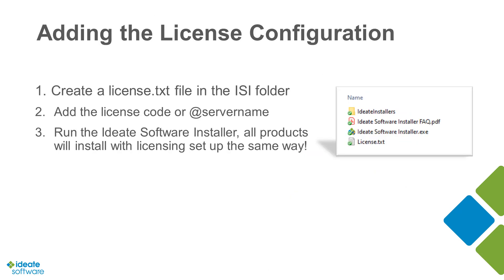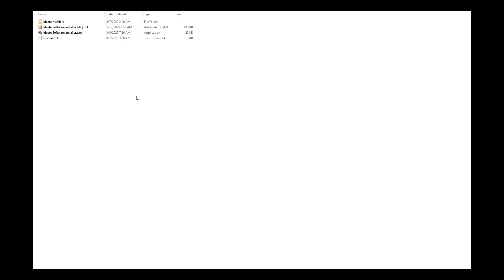To ensure all users are automatically set up with the correct network or standalone license, we recommend including the license configuration with the install process. Let's see how. To control the license of our newly installed applications, we use a file called license.txt.